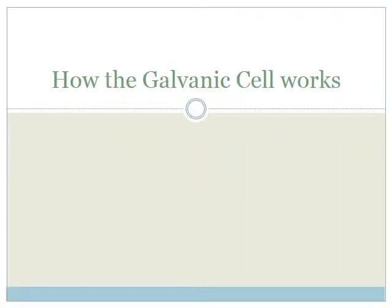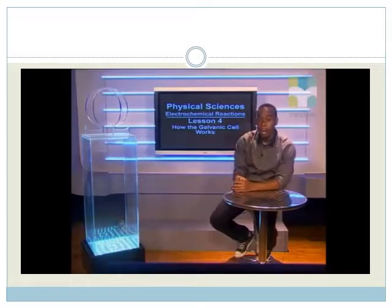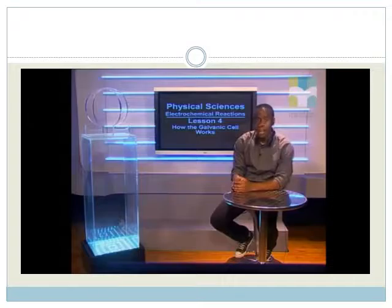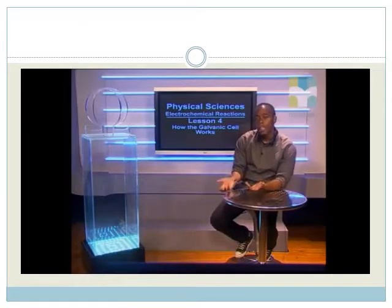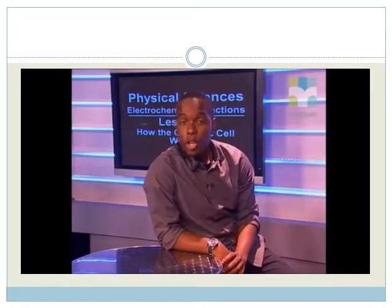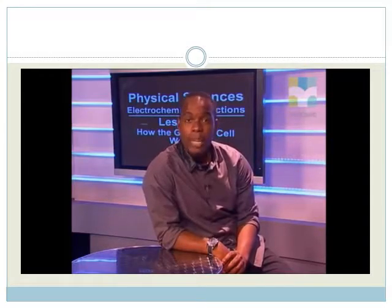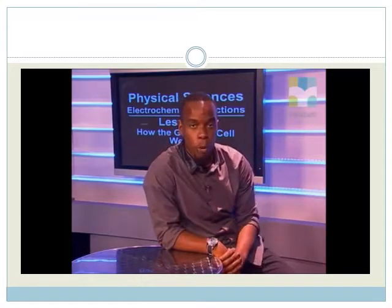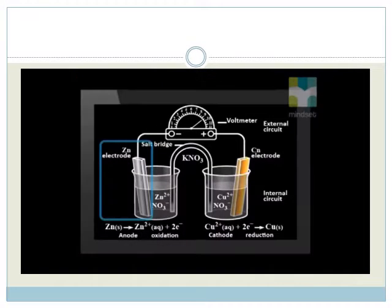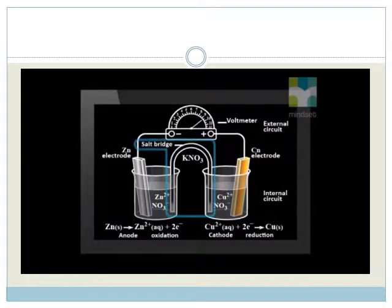Today we will look at one of the two types of electrochemical cells, namely the galvanic cell. We already know that redox reactions take place in both types. After today's lesson, you will understand the processes that take place in the galvanic cell, and you will be able to describe the movement of ions through the solutions and the electron flow in the external circuit of the cell. You will also be able to predict the half reactions at the electrodes and describe the function of the salt bridge in the galvanic cell.